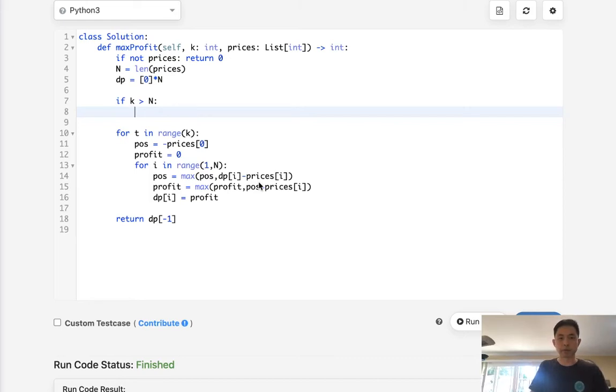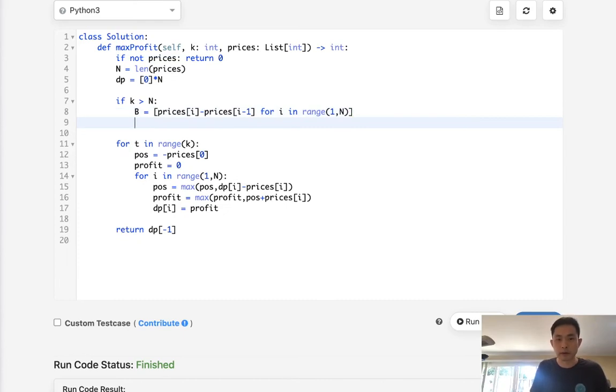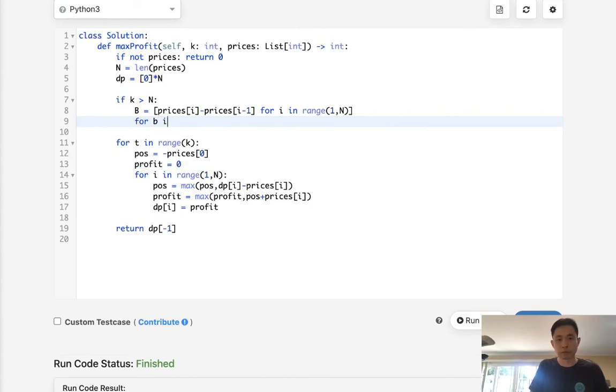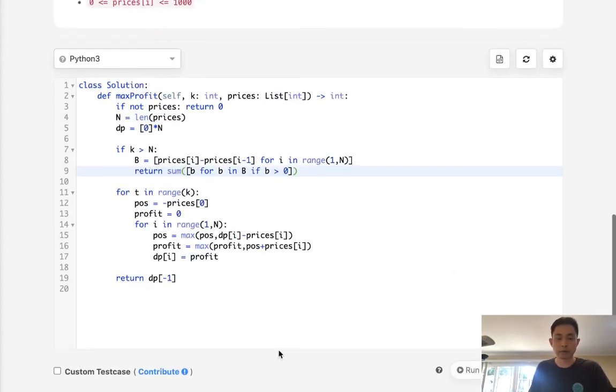So what I'll do is we'll make a new list. For i in range of 1 through n, we will get the differences between prices[i] minus prices[i-1]. This will give us all the differences. And then we'll just say, okay, for all these prices, for b in B, if the b is greater than 0, then I'll put that, and we'll just return sum of that. Let's see if this works. And accepted.